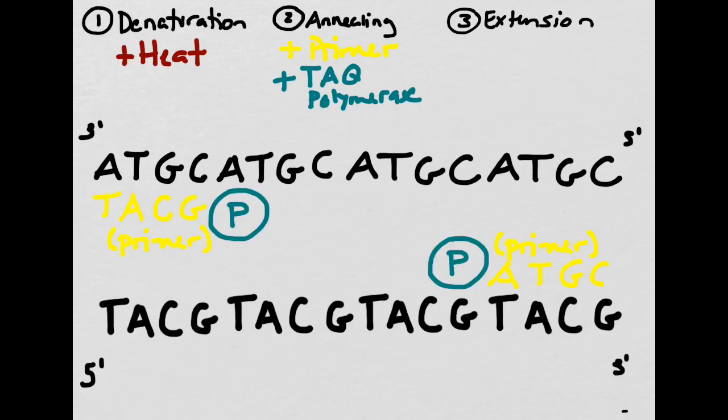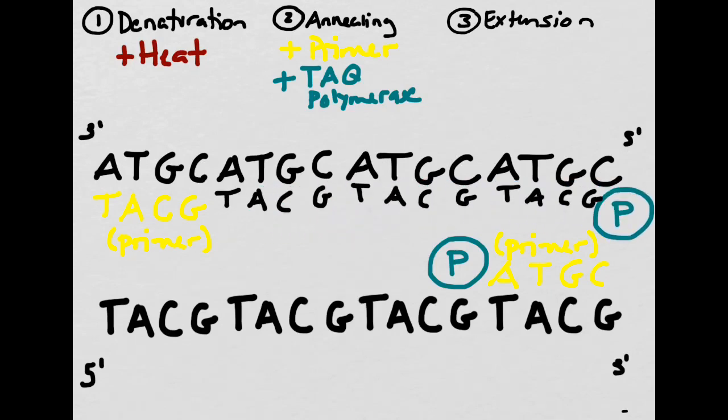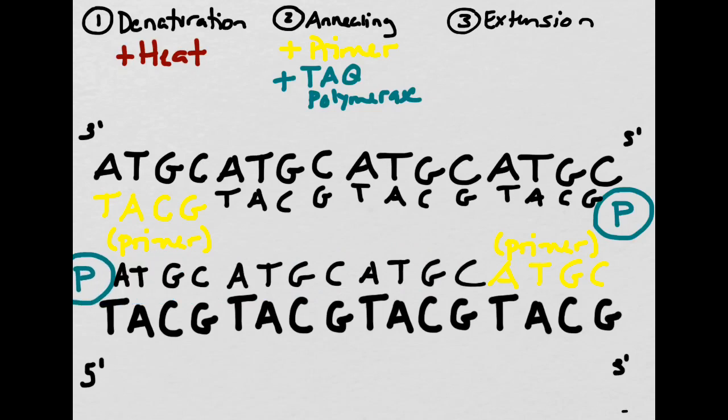The two taq polymerases then move down the strand of the DNA. As they move, they create the complementary strand. We now have two identical strands made from only one original strand.